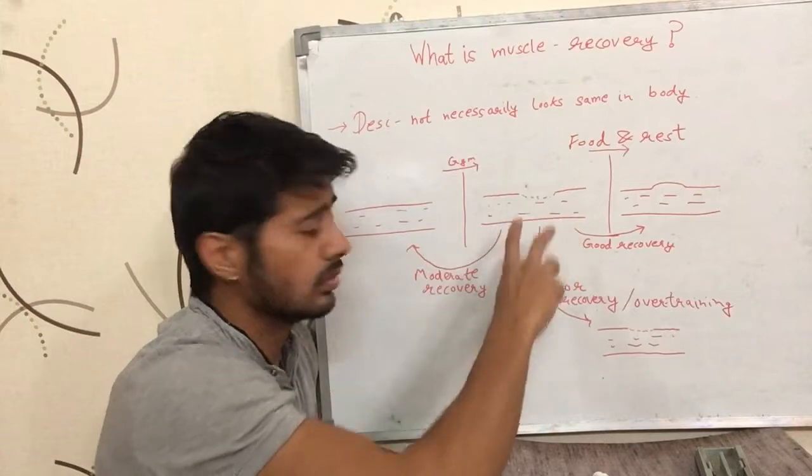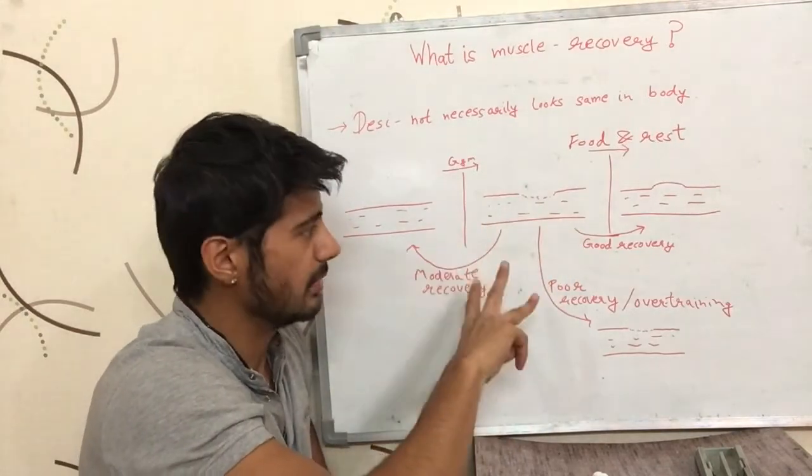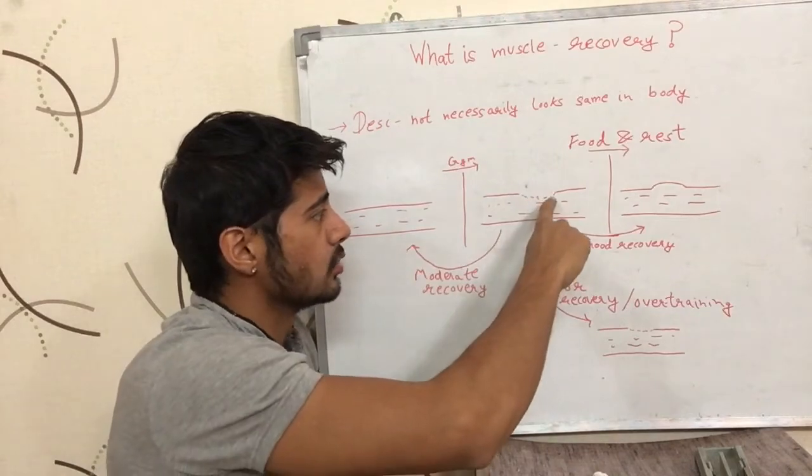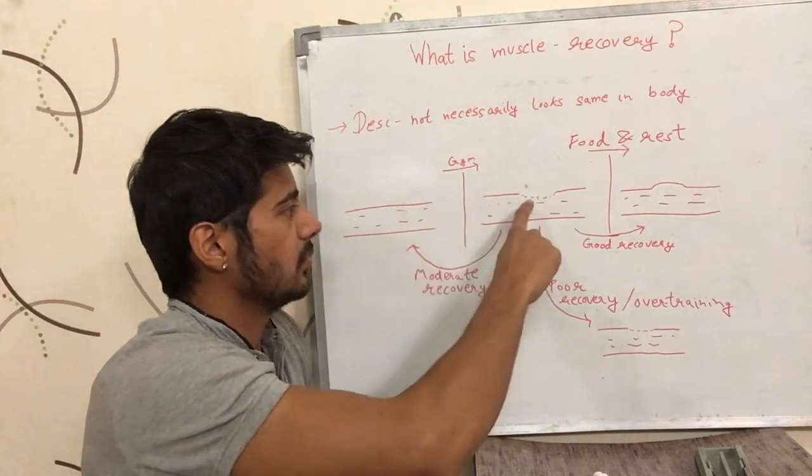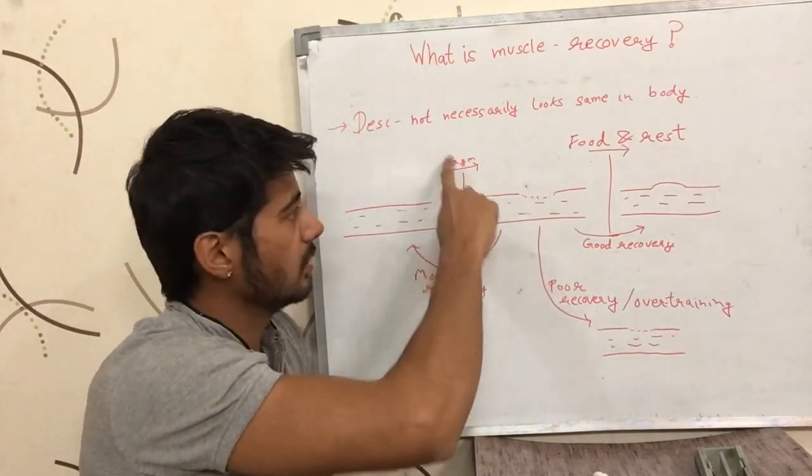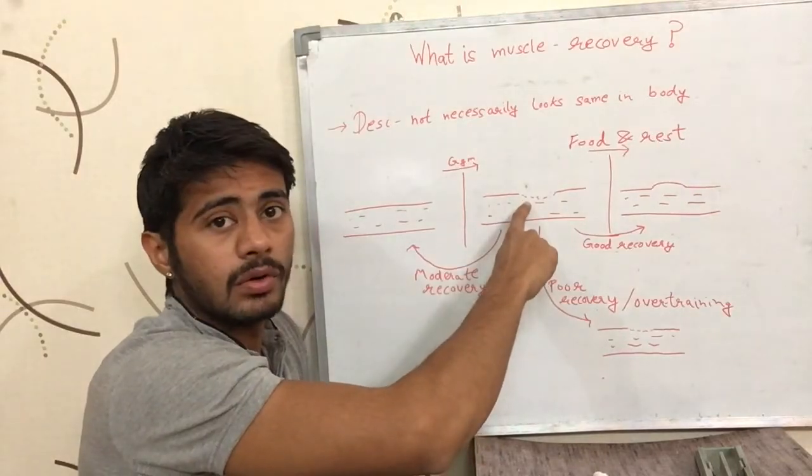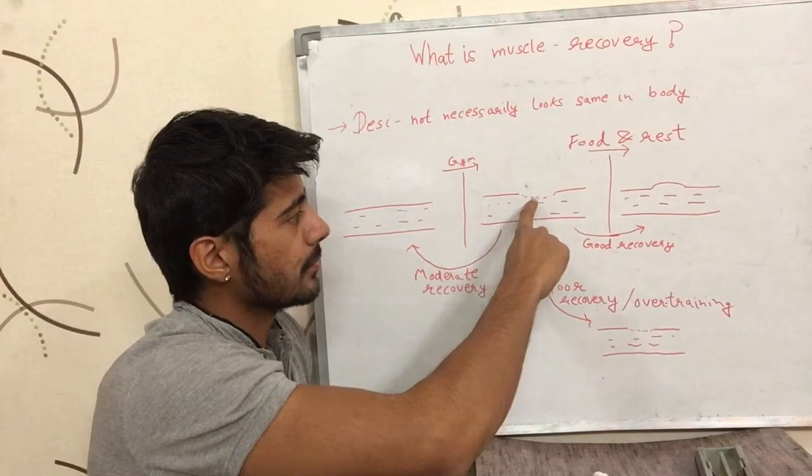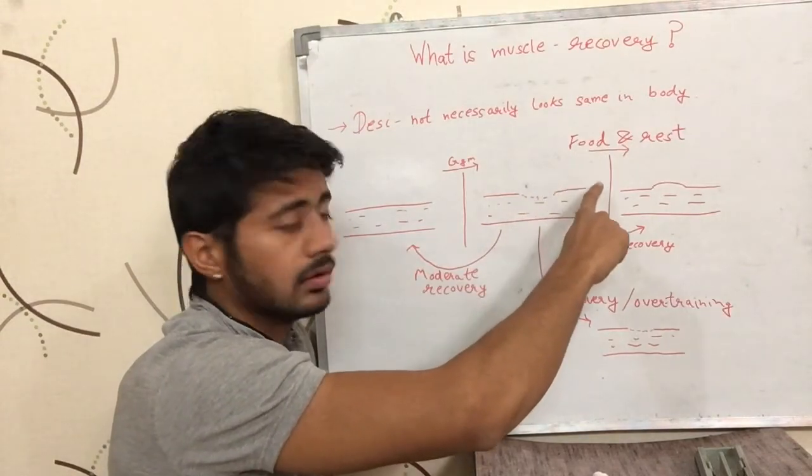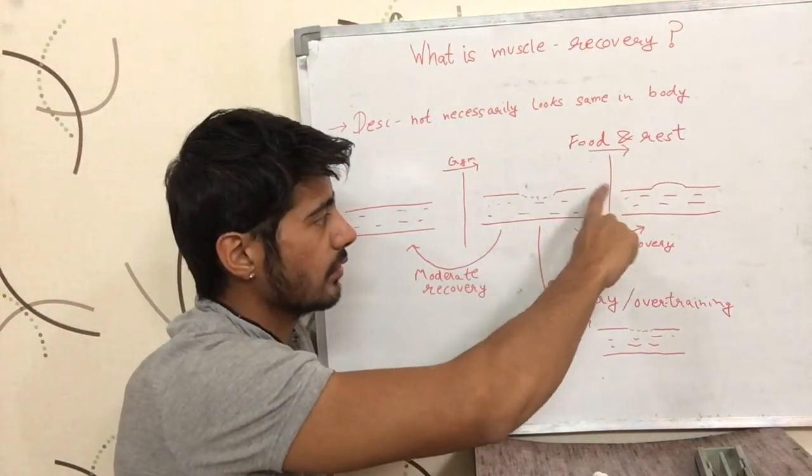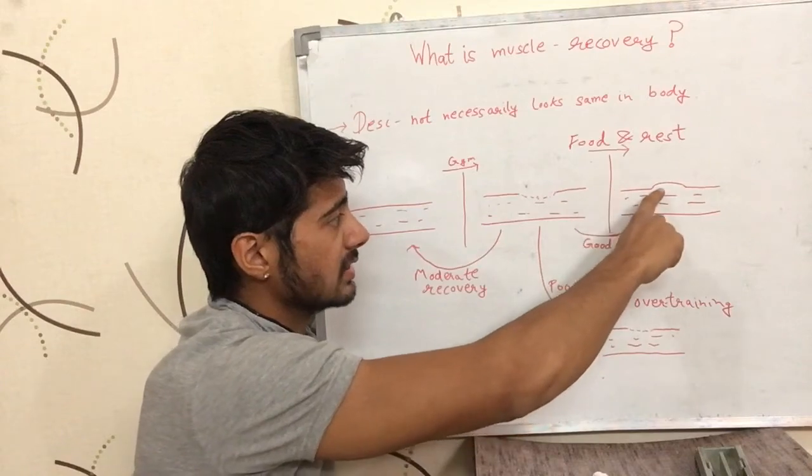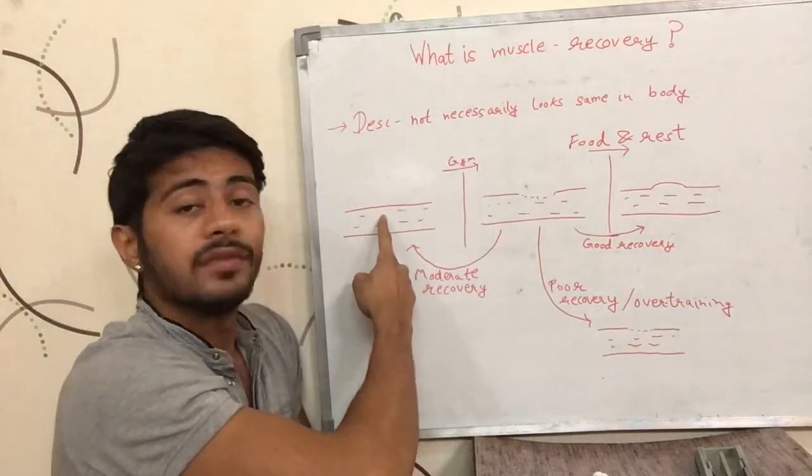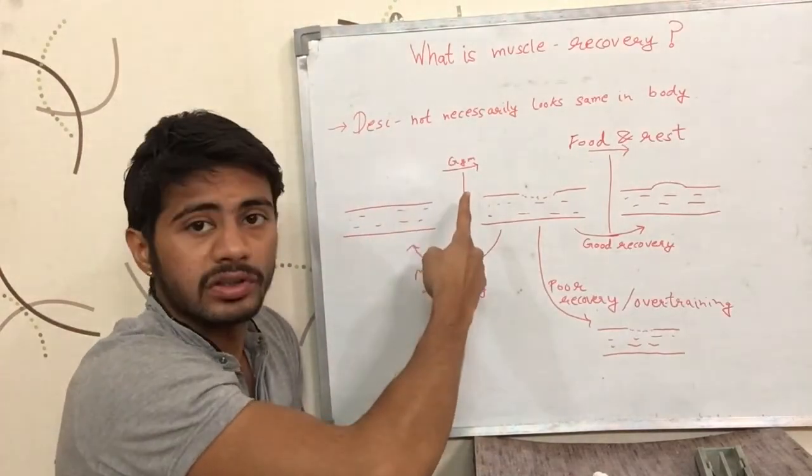And so the recovery can happen in three manners. Let's say a good recovery happened, so we started with this stage. We had the broken muscle just after the workout of the gym. And when we had the right food and the good amount of rest, our muscle recovered and it actually became bigger and stronger than where we started before going to the gym.